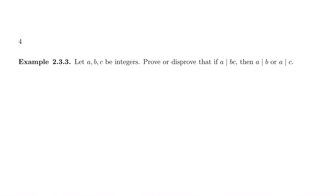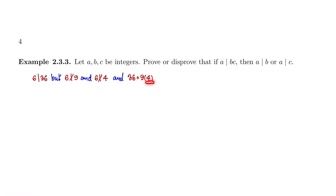I think we might have 6 divides 36. And what is 36? 36 is 9 times 4. But 6 does not divide 9, and 6 does not divide 4. So we can see that 6 divides 36, but 6 does not divide 9 and 6 does not divide 4. So we have disproved this statement.